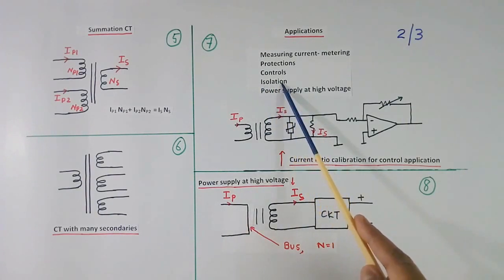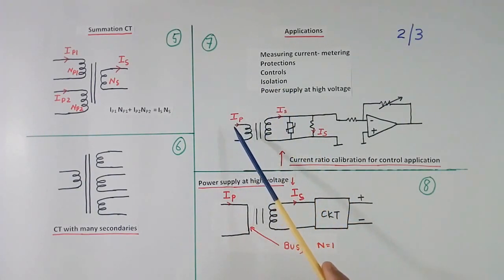Isolation. Sometimes we don't want ratio 10 is to 1 or 1 is to 10. Whatever current here, same thing can be used. But suppose this is high voltage. Then this cannot go directly to IC. So we use CT of 1 is to 1 ratio but only for isolation purpose.